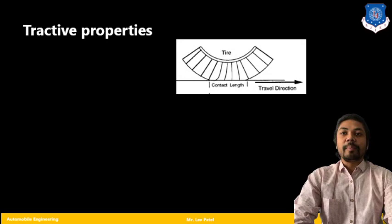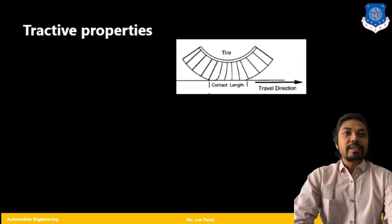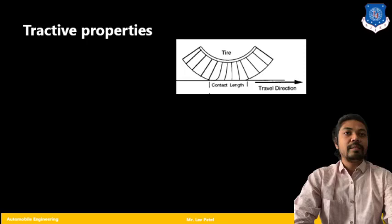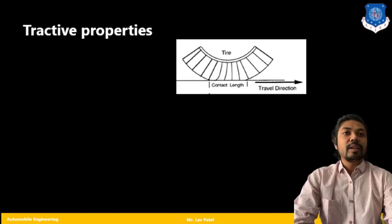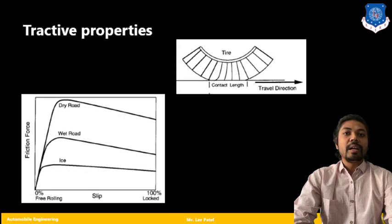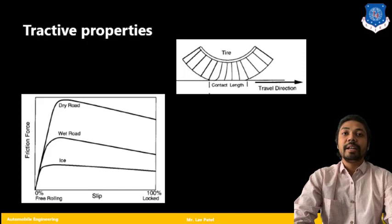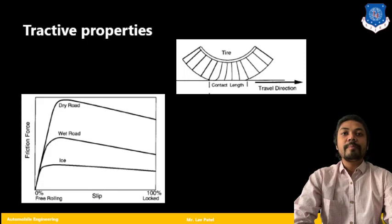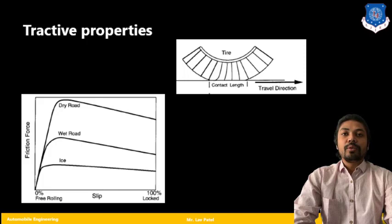Last and final topic, that is tractive properties. Again here you can see the travel direction has been given, the tire is there, and here you can see the contact length. The contact length depends upon the speed, also the road surface, and acceleration and braking. Now if you are talking about the different friction force and slip, here you will find that the slip friction force is very high in dry road. As we all know, braking is very effective in dry road compared with wet road and ice. The friction force is very high at dry road, medium in wet road, and very less in ice area. For that particular slip is going to be the same. At initial level at dry road the slip is very less compared to other two environments.